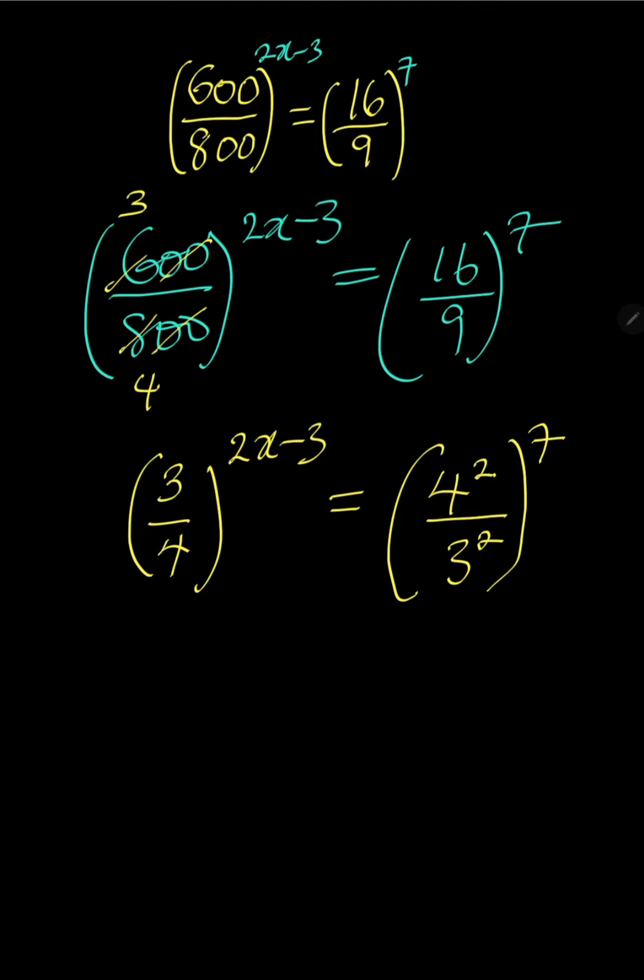So from this we shall have 3 all over 4 to the power of 2x minus 3 is equal to the right hand side. You notice that the power of 2 is common. You can single it out.